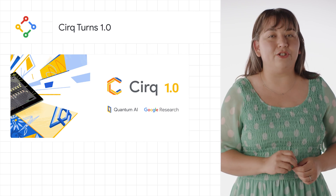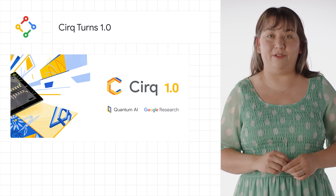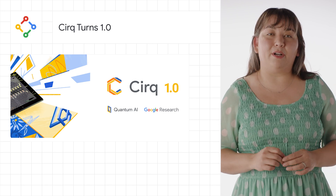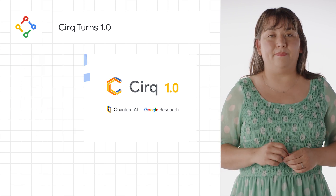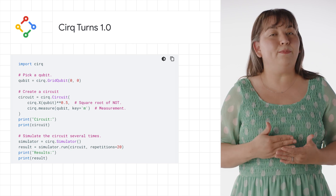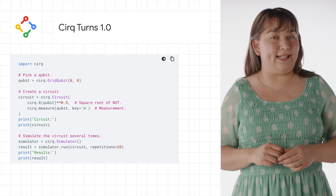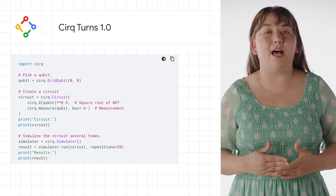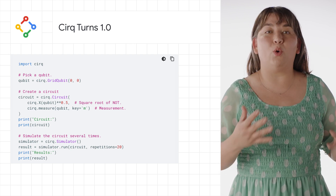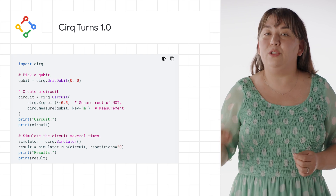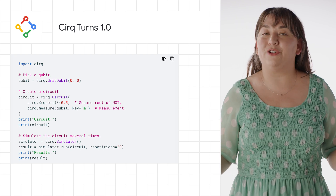We announced the first full version release of the open-source quantum programming framework, Cirq 1.0. Cirq is a Python framework for writing, running, and analyzing the results of quantum computer programs. It was designed for near-term quantum computers — those with a few hundred qubits and a few thousand quantum gates. Several libraries were built on top of Cirq, enabling different quantum computing research areas like TensorFlow Quantum, and numerous quantum cloud services from companies in the industry have also integrated with Cirq.